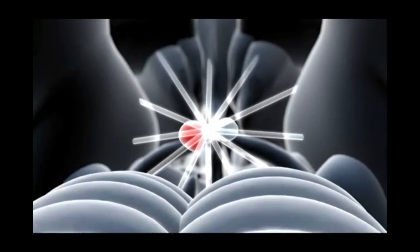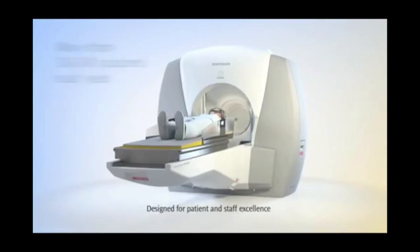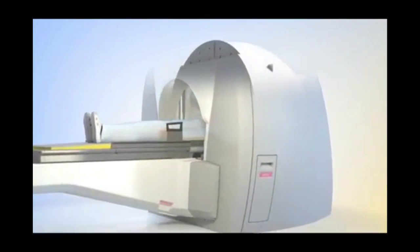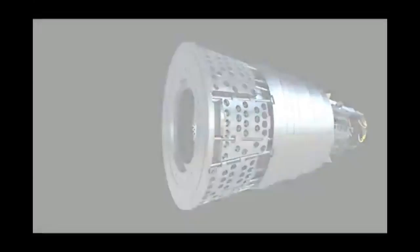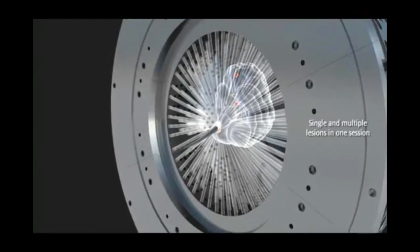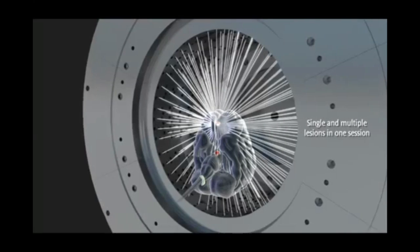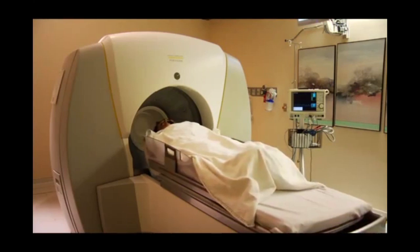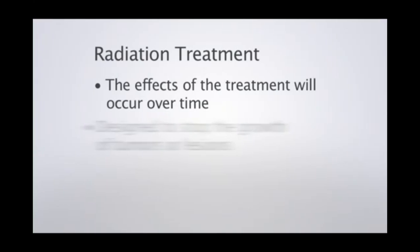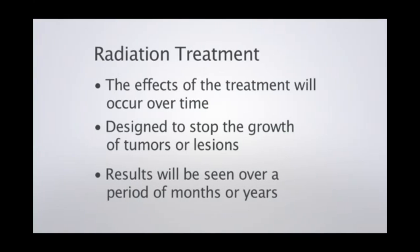Precisely focused beams of radiation are directed to the treatment area. Gamma knife treatment is painless and allows you to quickly return to your normal routine. All radiation beams meet at a focal point with submillimeter precision — individual beams are too weak to damage healthy tissue, but very powerful when they merge at a single focal point. Once treatment is completed, the frame will be removed. The effects of treatment occur over time; results will be seen after a period of months or even years, as radiation treatment is designed to stop the growth of tumors or lesions.